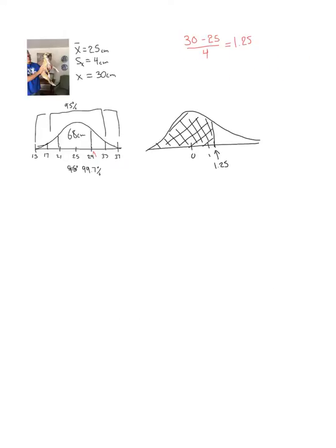So, remember, these two graphs are basically the same. We're just looking at the actual values of the heights of dogs. And this is really a standard deviation graph. So, that's why we take these numbers and calculate how many standard deviations. 1.25 times 4 above the average.